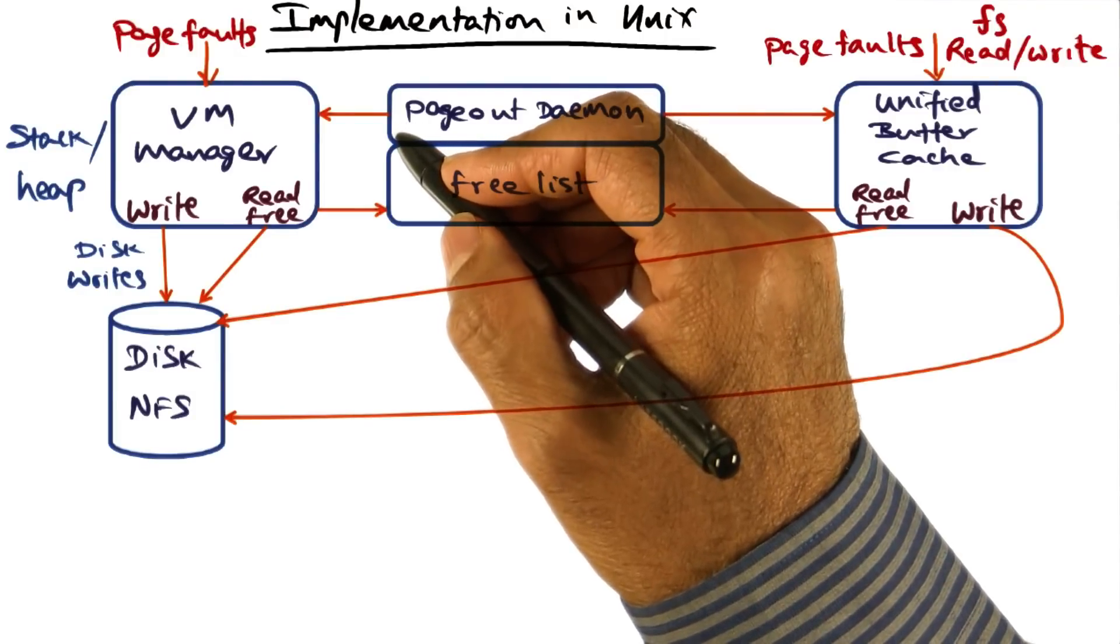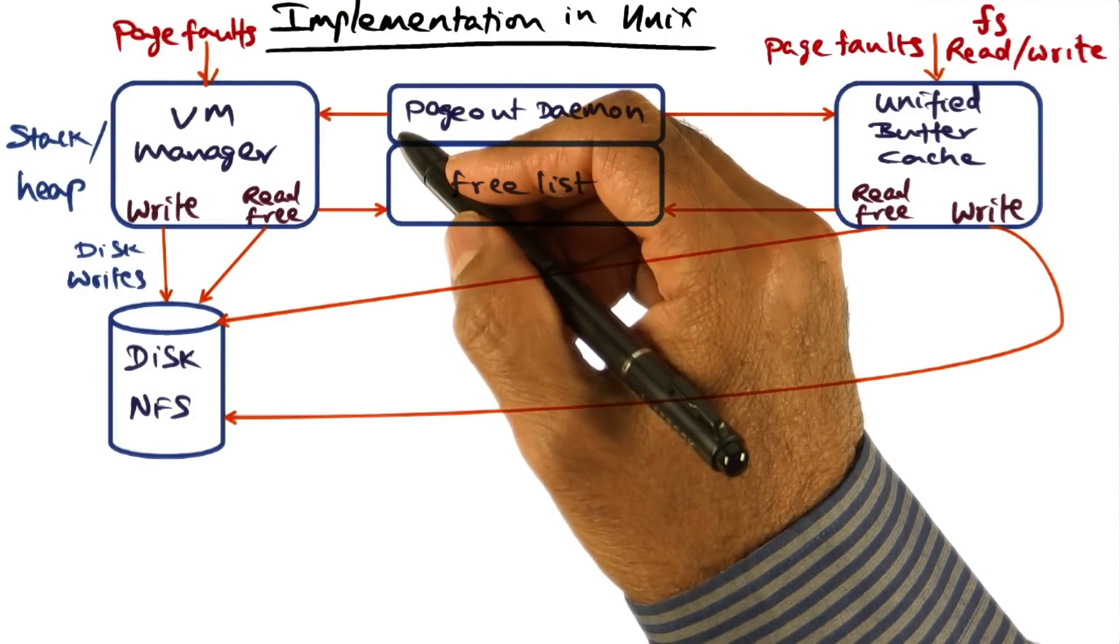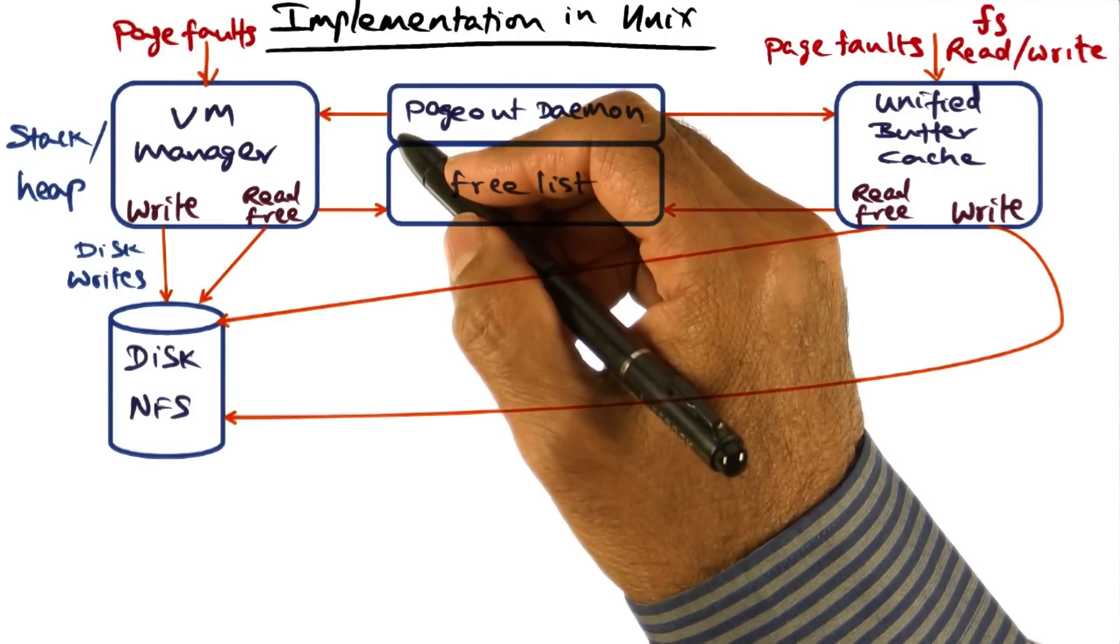So from algorithm description, we go to implementation now. This is where rubber meets the road in systems research.